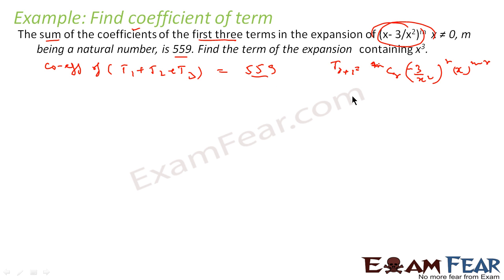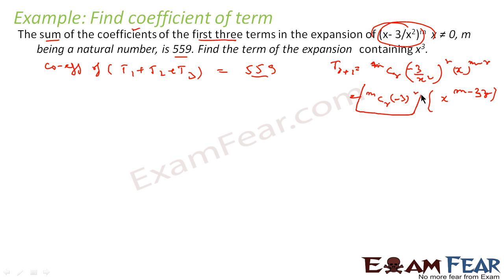That simplifies to mCr times (-3)^r times x^(m-3r), because we have m minus r from one part and 2r from the other, giving m minus 3r. So the coefficient terms we need are T(0+1), T(1+1), and T(2+1).